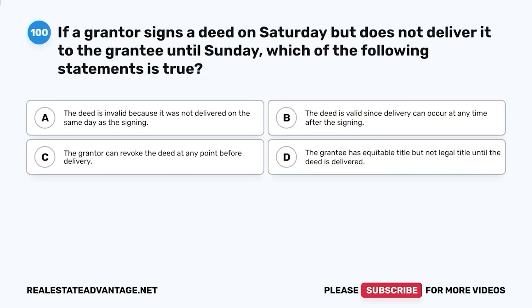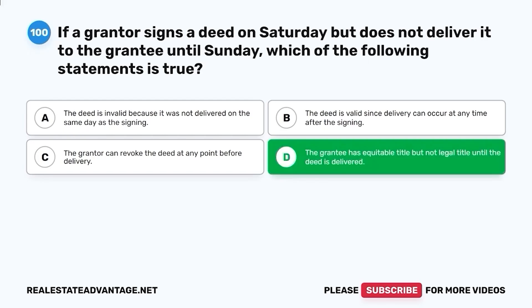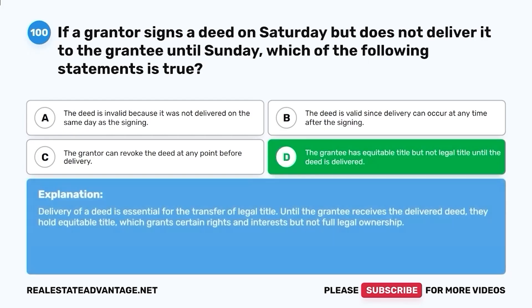Question 100. If a grantor signs a deed on Saturday but does not deliver it to the grantee until Sunday, which of the following statements is true? A. The deed is invalid because it was not delivered on the same day as the signing. B. The deed is valid since delivery can occur at any time after the signing. C. The grantor can revoke the deed at any point before delivery. D. The grantee has equitable title but not legal title until the deed is delivered. The correct answer is D. Delivery of a deed is essential for the transfer of legal title. Until the grantee receives the delivered deed, they hold equitable title, which grants certain rights and interests but not full legal ownership. Don't forget to share this video with your friends and subscribe for more practice tests.